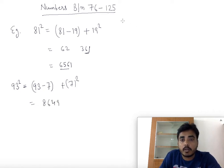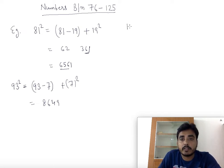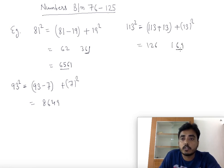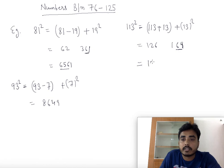Now if the number is greater than 100, let's find the square of 113. We compute 113 plus 13 plus 13 squared. 113 plus 13 is 126 and 13 squared is 169. We write only the last two digits — 69 — and carry 1 to 126, giving 12769.